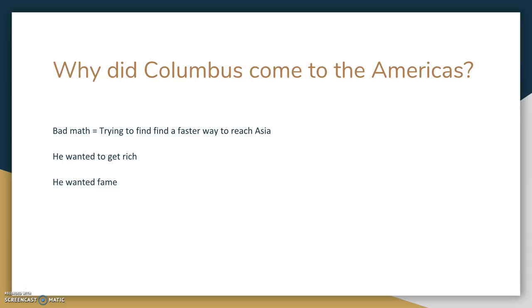So basically he thought the area of the United States — North America — was not there. He thought he had a shot to Asia by sailing west. The main reason he wanted to find this route west was to get rich and to become famous by finding this route.